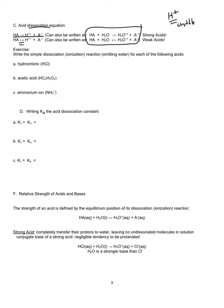Strong acids have very weak conjugate bases. HCl is a very strong acid — Cl⁻ is an extremely weak conjugate base and therefore does not really accept protons very much, if at all. It really is almost a neutral particle.